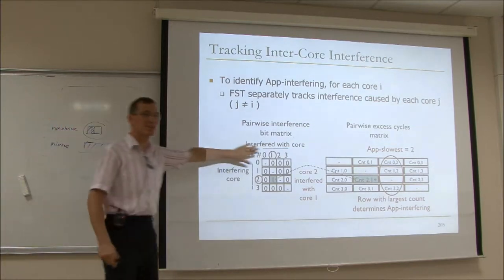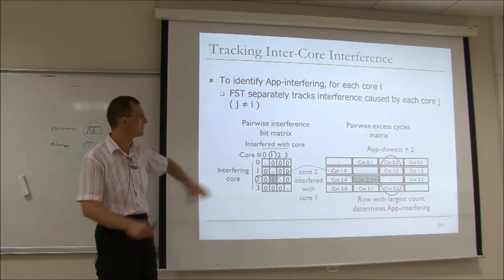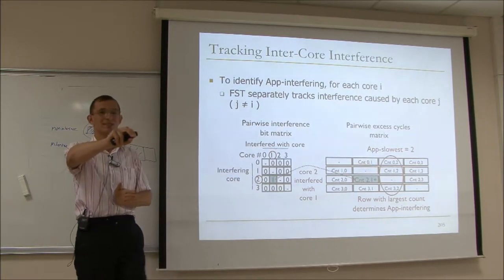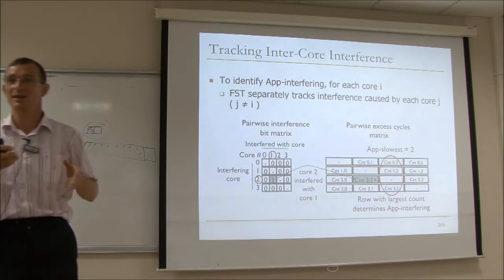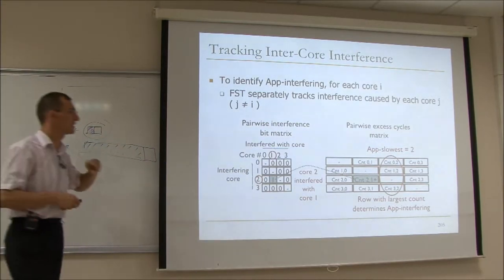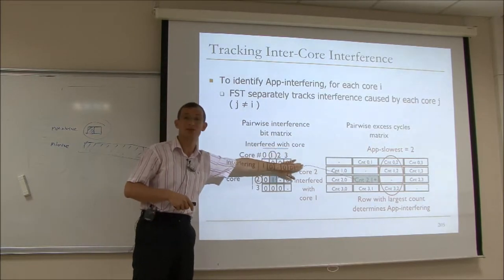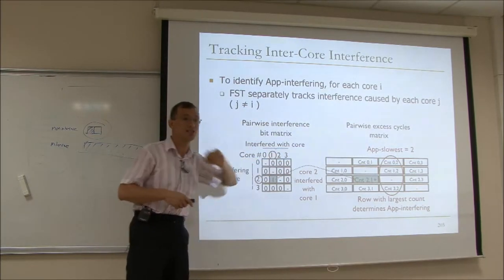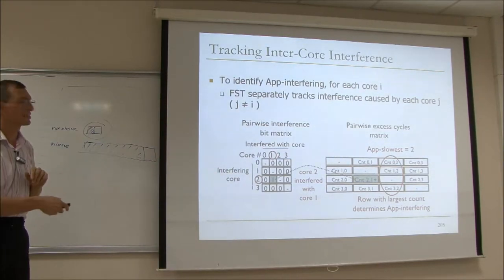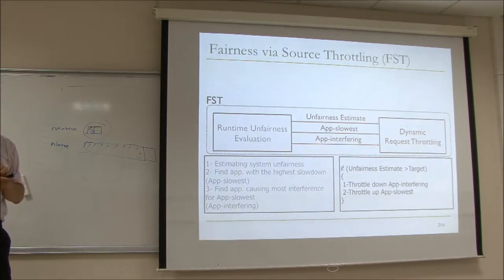This is the least scalable part of the system because you need N-squared counters for N cores. We have a linear mechanism in the Transactions on Computer Systems paper that does not lose much accuracy compared to this. The key idea in the linear mechanism is to aggregate some counters.